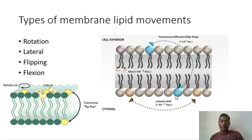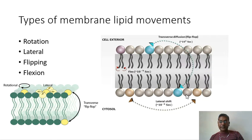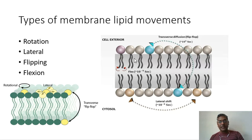For example, to move a phospholipid from one leaflet to another, there are enzymes like flipases. Flipases move phospholipids from the outer leaflet to the inner leaflet. In order to maintain the charge gradient across the membrane, flipases predominantly transport phosphatidylserine and to a lesser extent phosphatidylethanolamine.